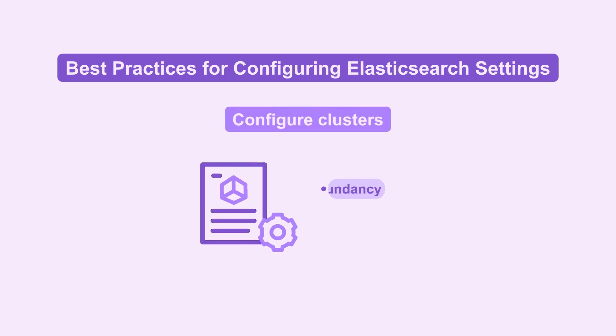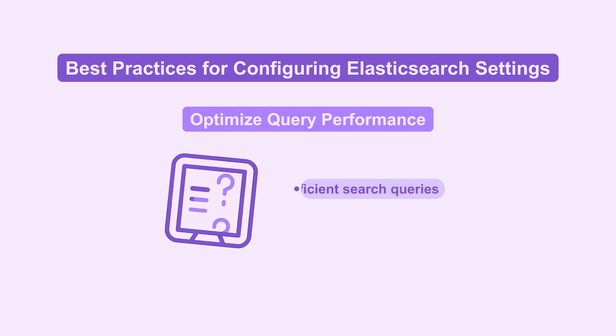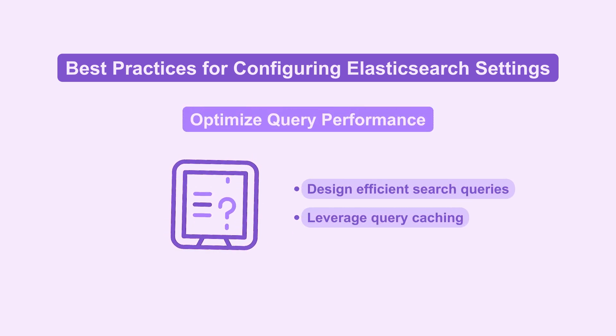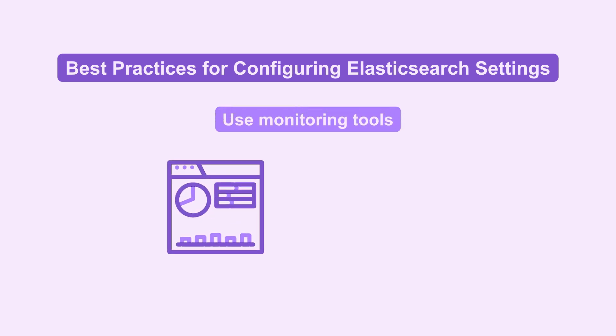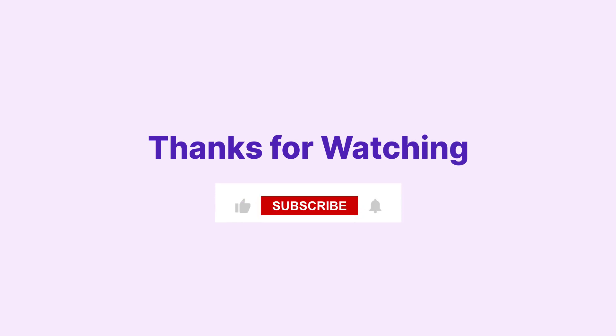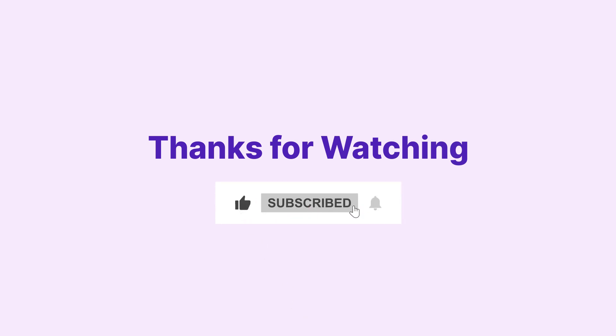Configure clusters with redundancy and fault tolerance mechanisms. Design efficient search queries and leverage query caching to reduce latency. Use monitoring tools to track performance metrics and troubleshoot issues. We hope you found our exploration of Magento 2 AWS Elasticsearch insightful. Like this video and subscribe for more professional insights on enhancing your e-commerce site's search capabilities.